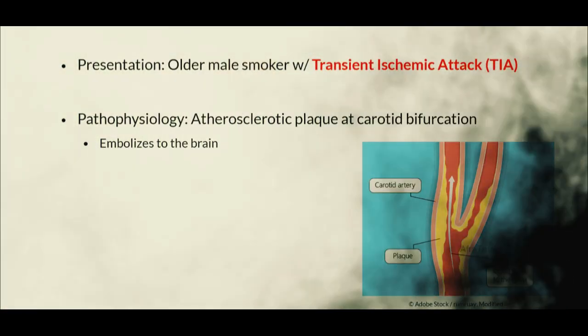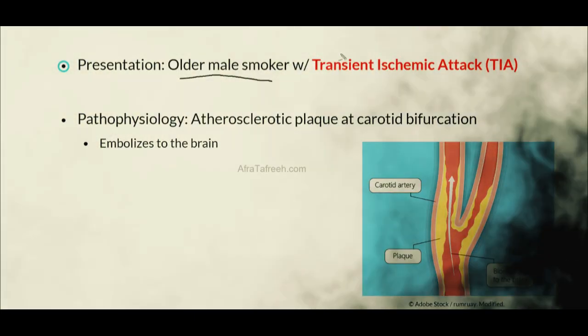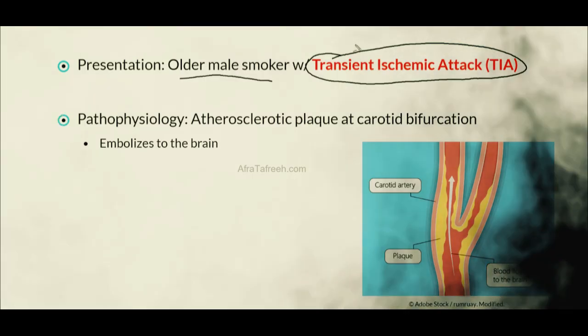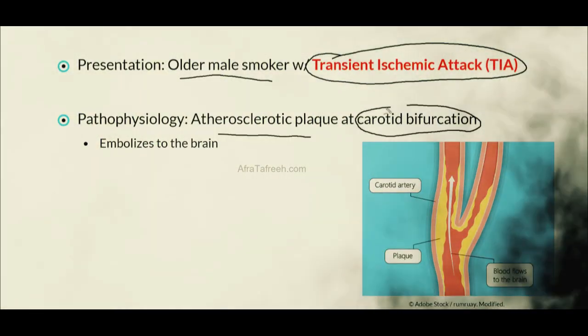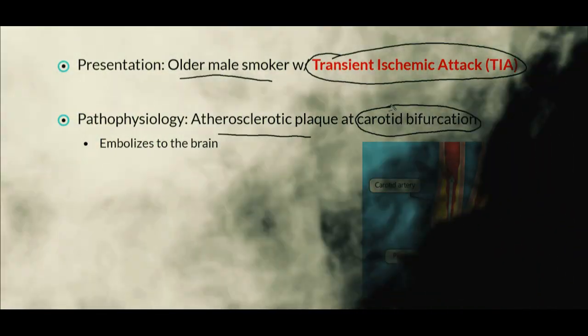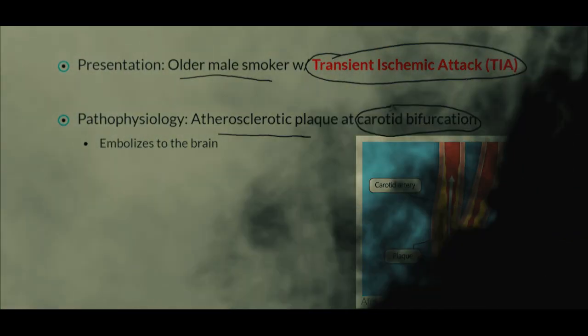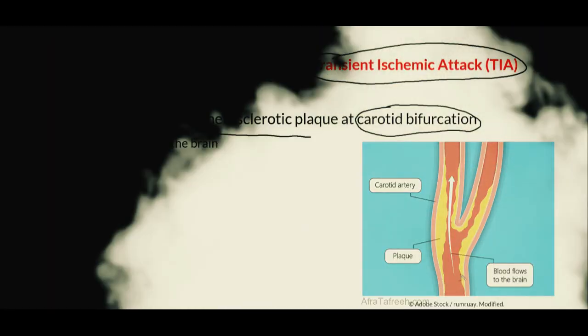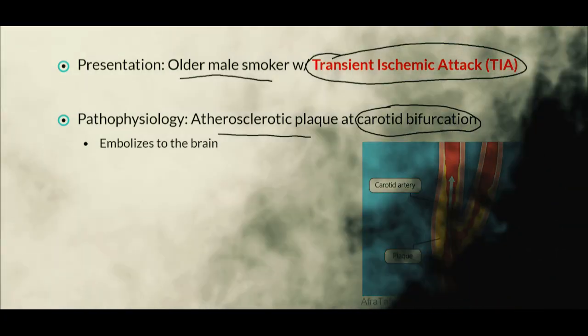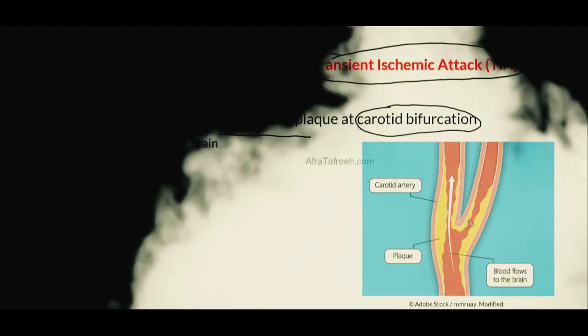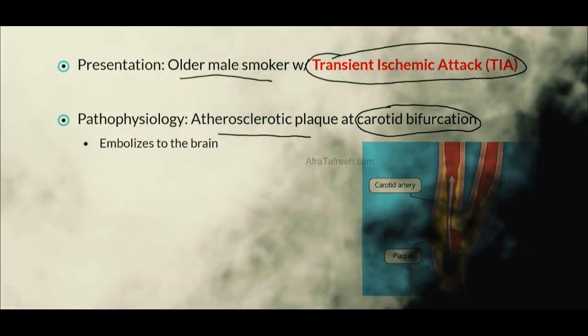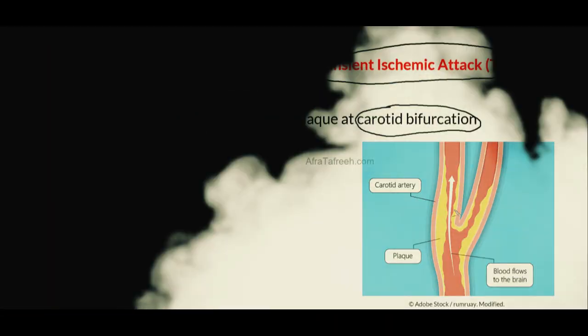Moving on to carotid stenosis, our classic patient for this condition is going to be an older male smoker who presents with a transient ischemic attack or TIA. The underlying pathophysiology is an atherosclerotic plaque, particularly one that occurs at the carotid bifurcation. We can appreciate the location of this plaque in our schematic, where the bottom portion represents the common carotid, and above we have the external carotid as well as the internal carotid — ultimately creating a hindrance in terms of blood flow to the brain.